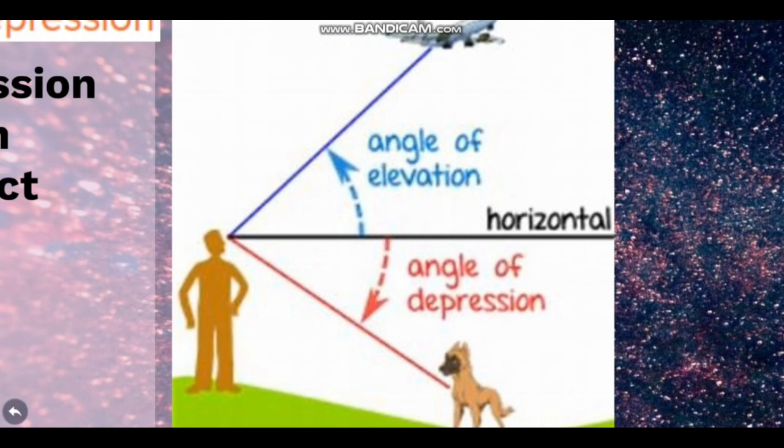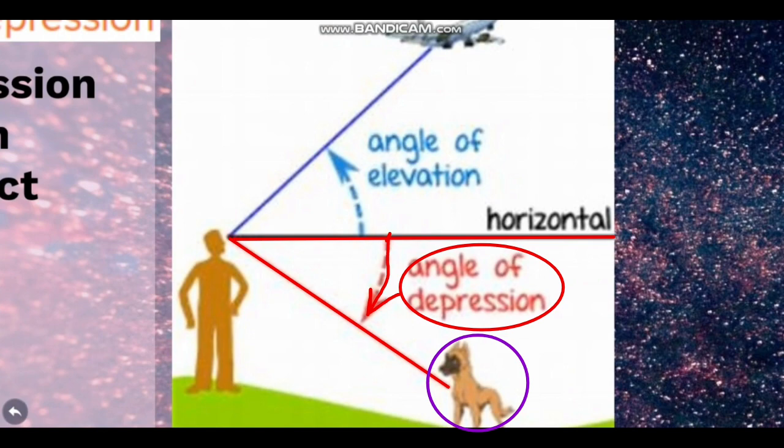So if you are looking at a plane up there and a dog below, the side here will make an angle of elevation with the horizontal line in front of the eye with the other side which is the side of the plane. These two sides make an angle of elevation. The other side where you're looking at the dog makes an angle of depression with the horizontal line in front of your eye.